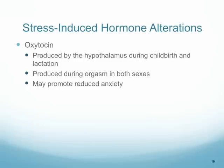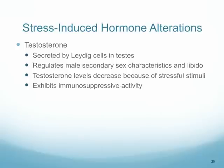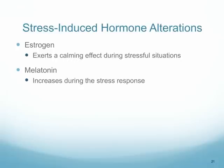Oxytocin is another stress-induced hormone that may help reduce some of the anxiety seen in very stressful situations. During stressful situations, testosterone can also be altered, affecting immunosuppressive activity as well. Estrogen and melatonin may also be released during a stressful situation and may actually help to have a calming effect during the stress.